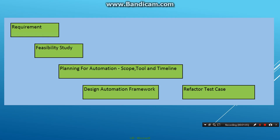Once the requirement is fed in — there might be different mechanisms to feed it in, maybe a website or something — it comes into the test automation team and a feasibility study is done. The feasibility study covers two aspects: business feasibility and technical feasibility.